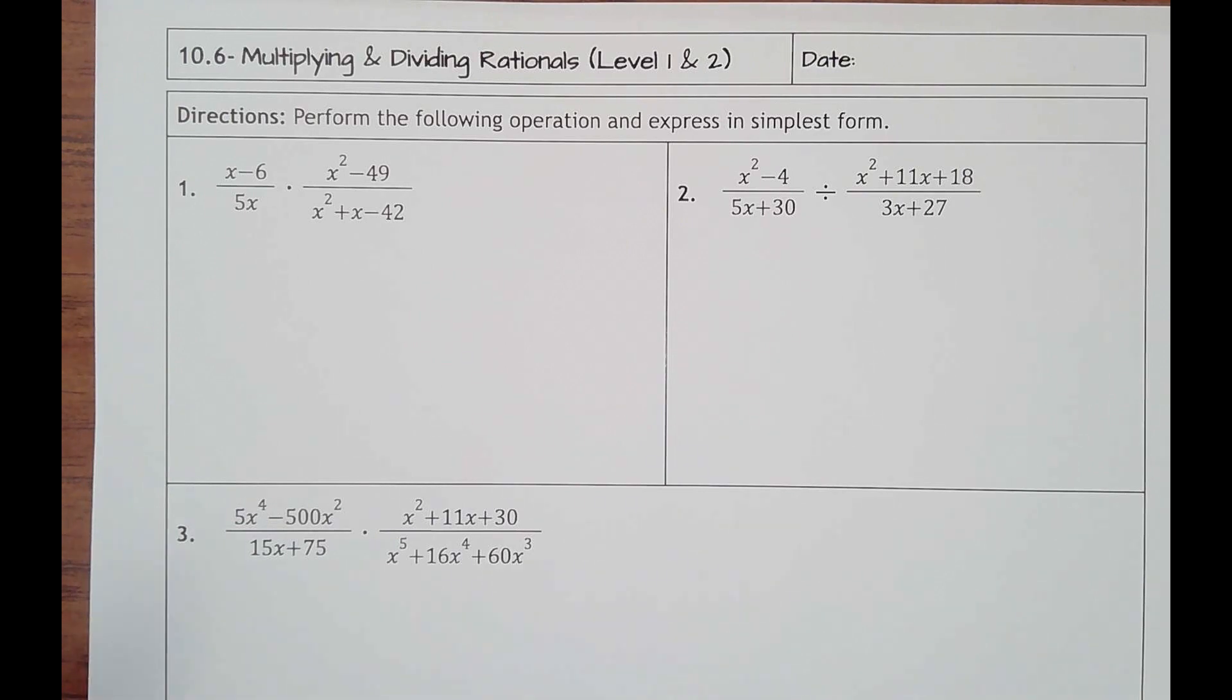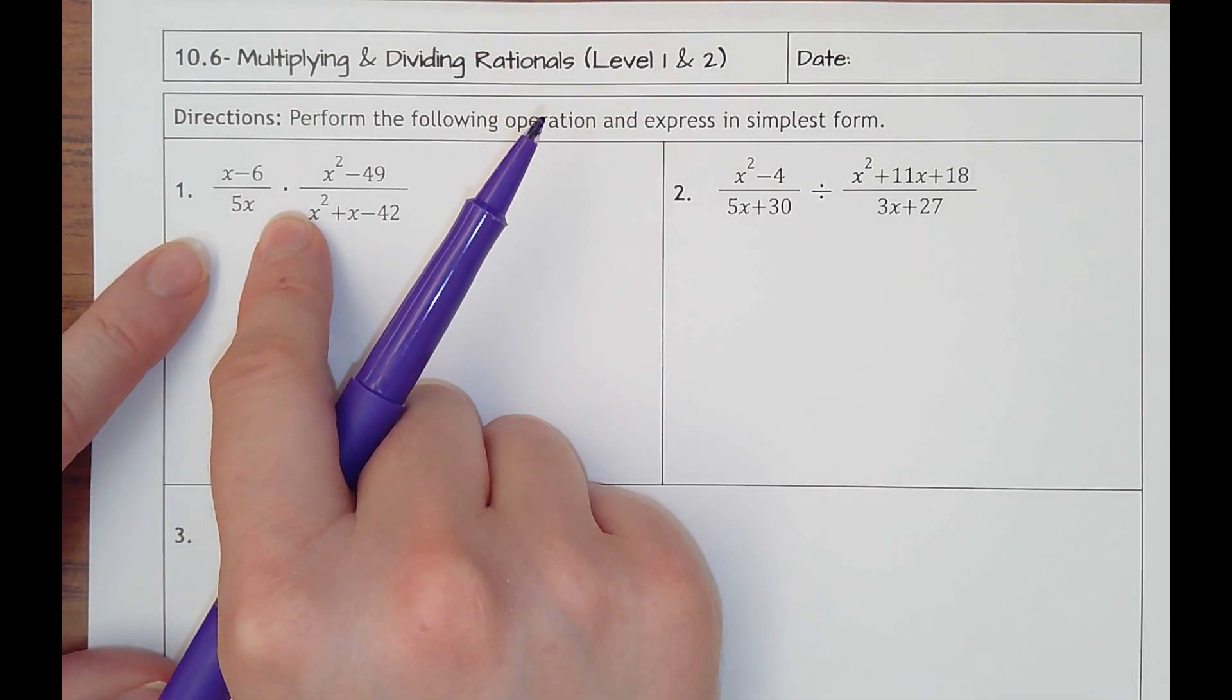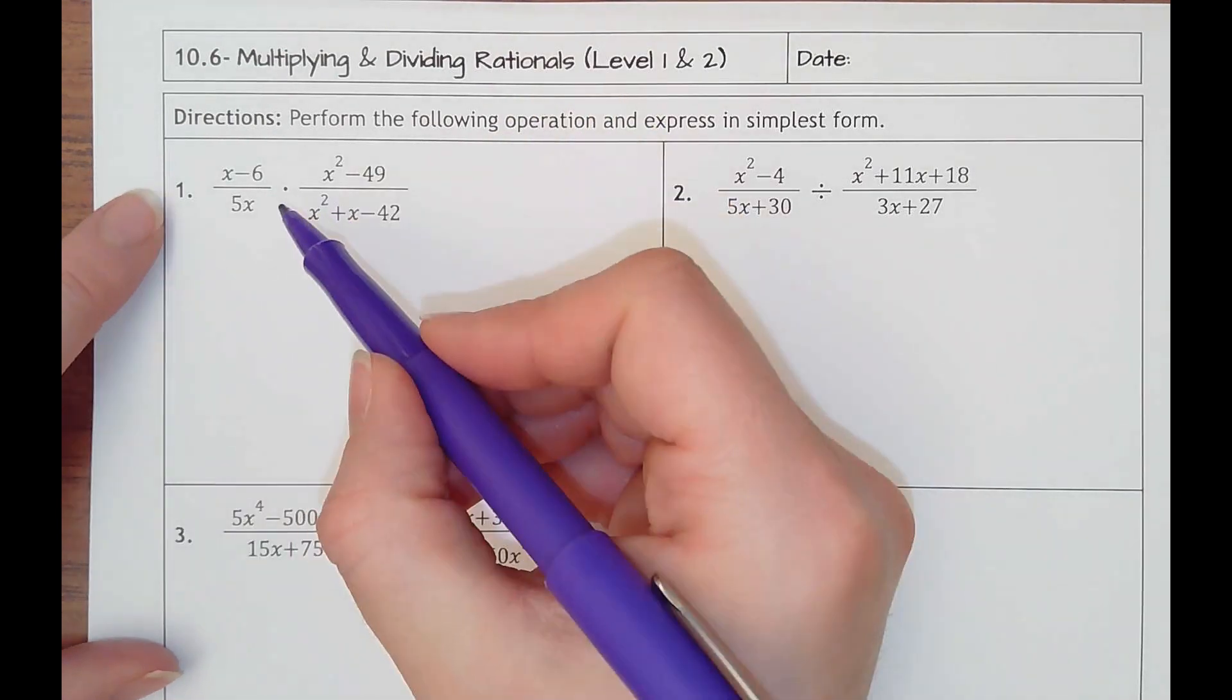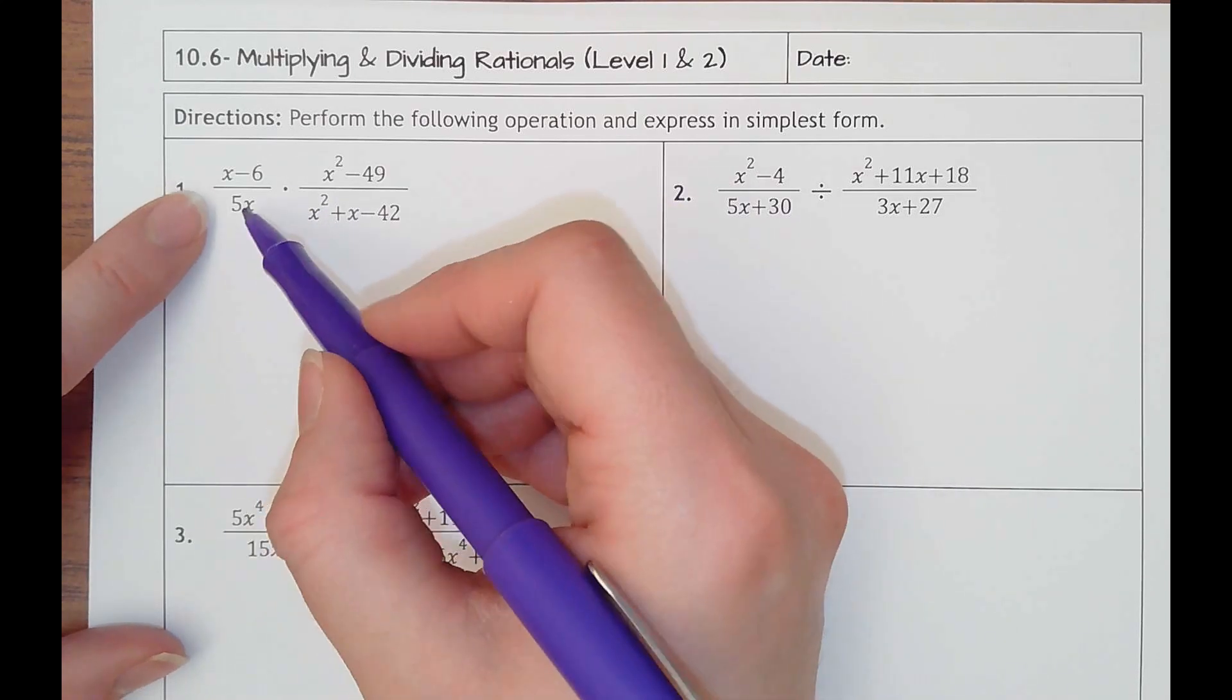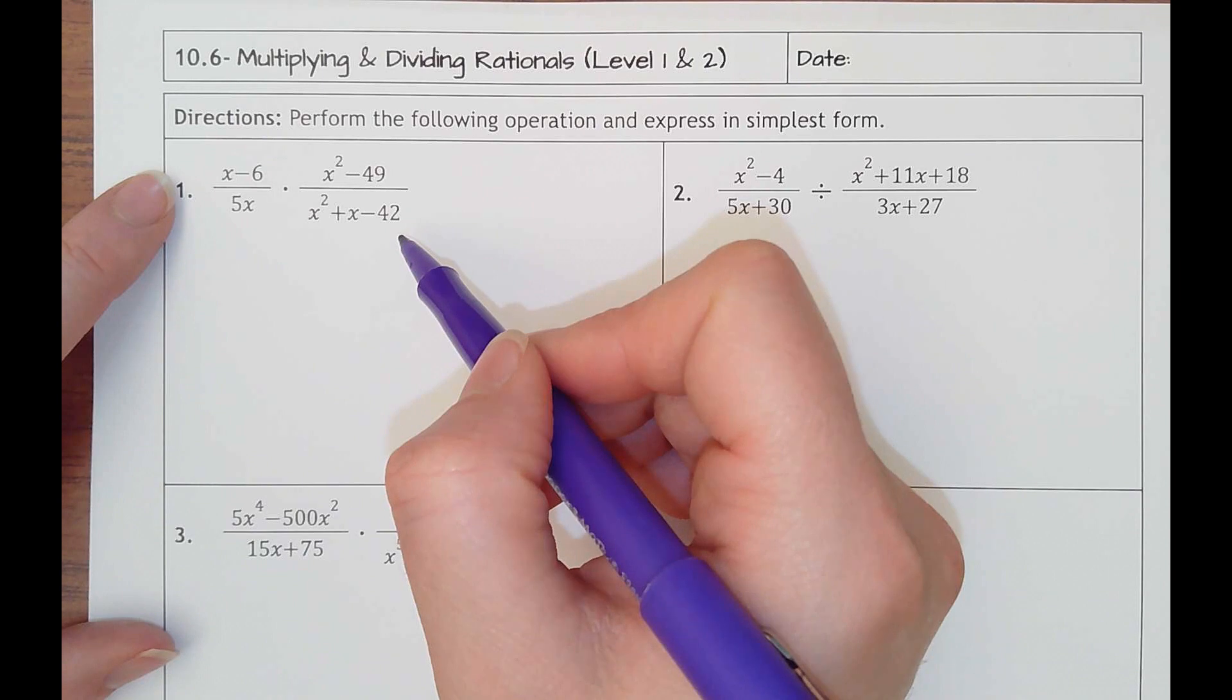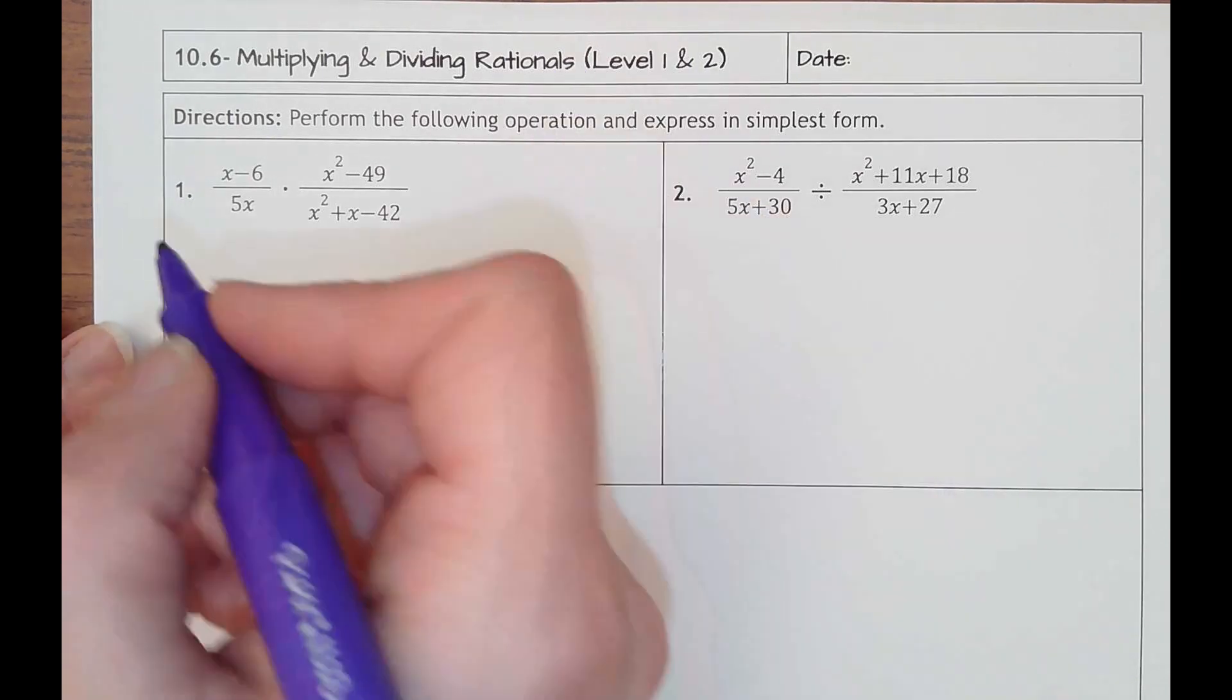So we know that when we multiply fractions, we multiply straight across. But what we want to do that would save us a lot of time, instead of having to foil this times this and this times this and then factor, we're actually going to factor first and then see what can simplify.